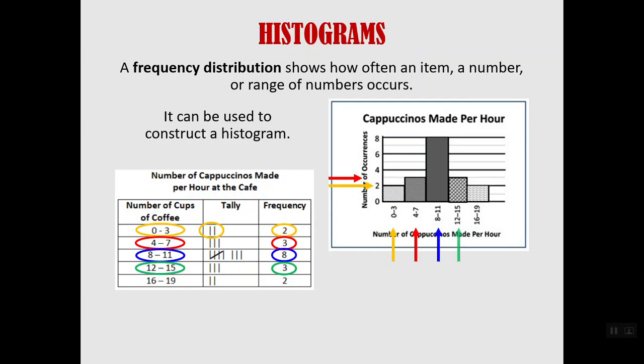You can see each of the categories in the frequency table corresponding to the bars and the groups in the histogram.